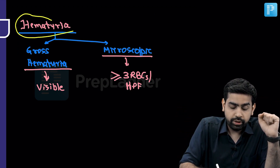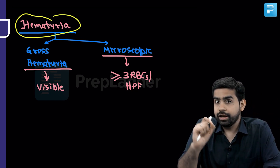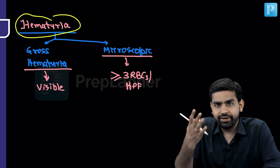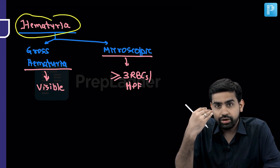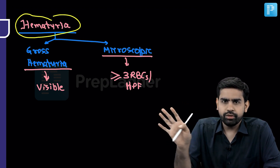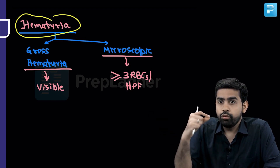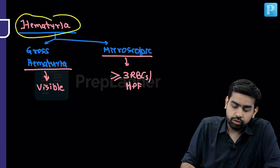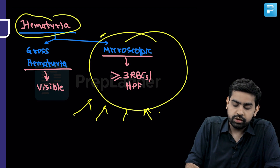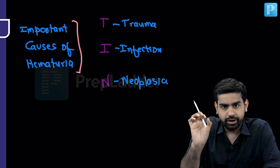Now let's talk about hematuria — blood in the urine. It can be either gross hematuria, where you can see red urine with the naked eye, or microscopic hematuria, where the physical appearance seems fine but under the microscope there are more than three RBCs per high power field. Microscopic hematuria is invisible to the naked eye; gross hematuria is visible.